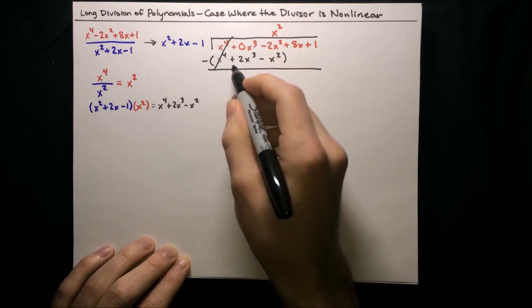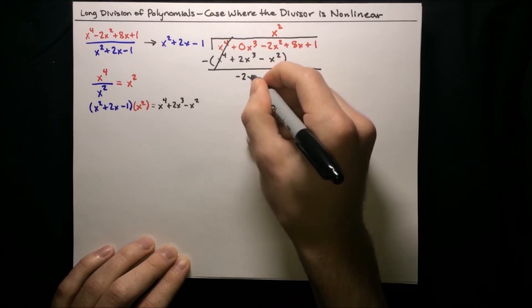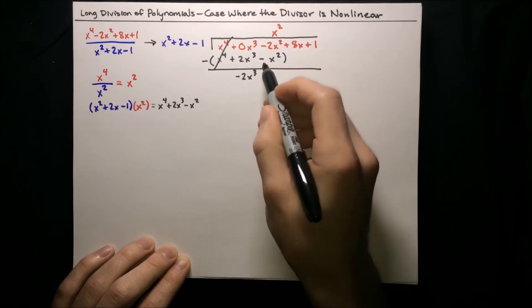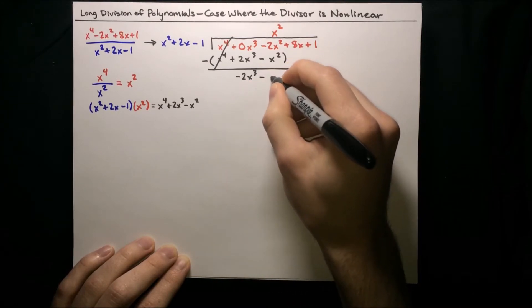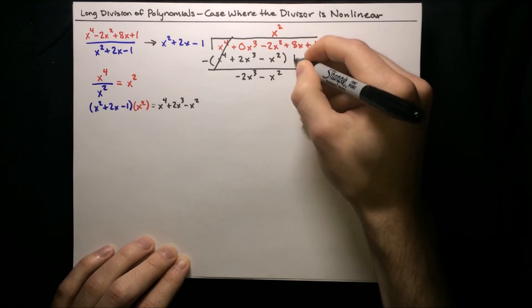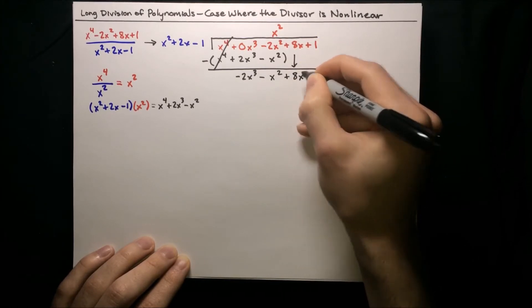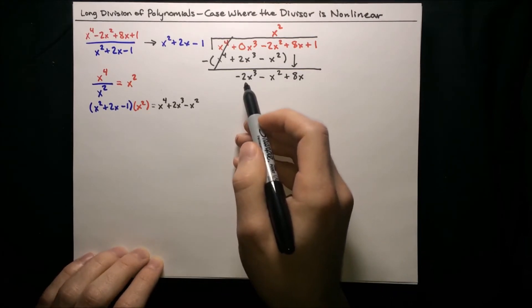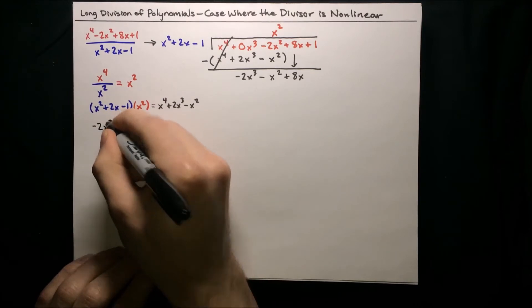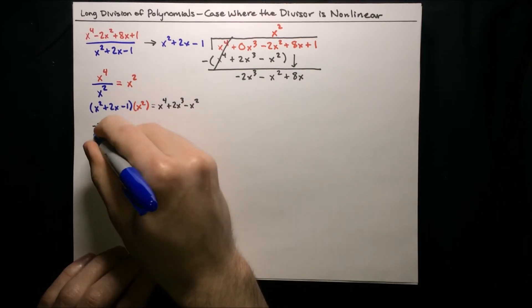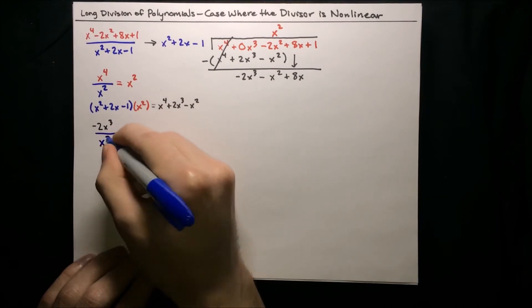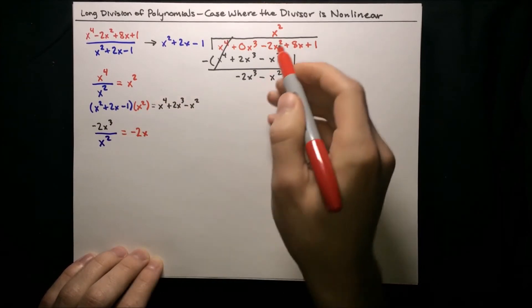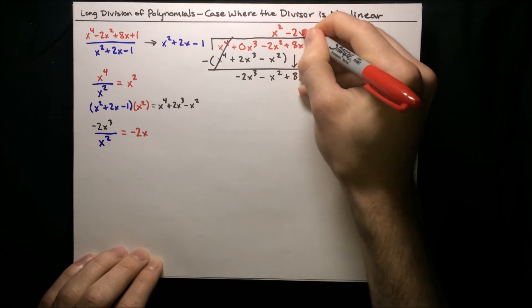Then 0x to the third minus 2x to the third is just negative 2x to the third. Then negative 2x squared minus negative x squared is like negative 2x squared plus x squared, because the negatives cancel, giving us minus x squared. We'll bring down our 8x term and repeat the process. Take that leading term, negative 2x to the third, divide it by the highest degree term of our divisor, which is x squared, and get a result of negative 2x.